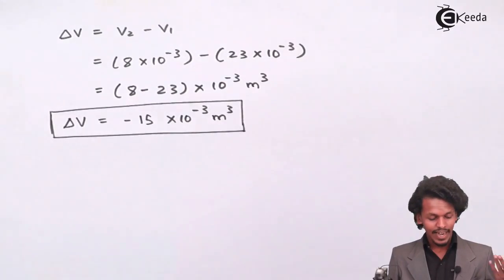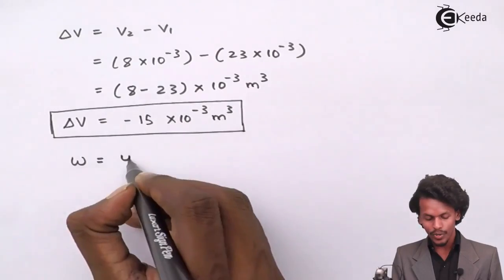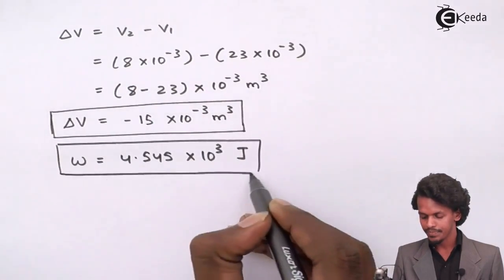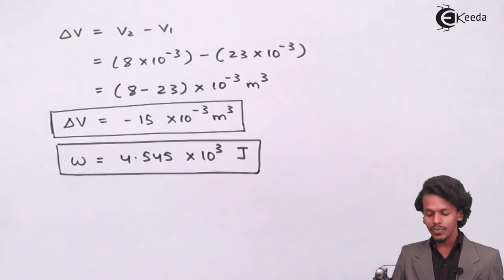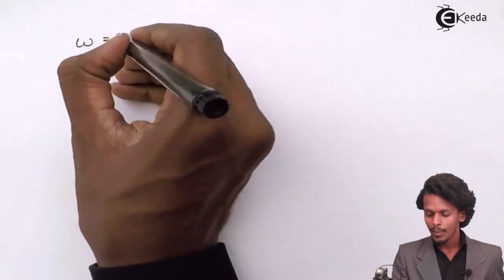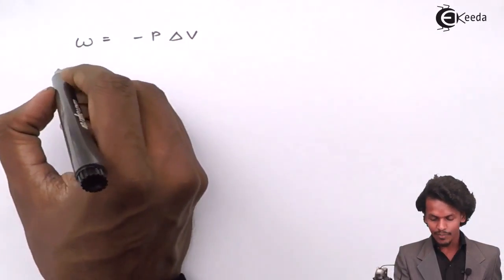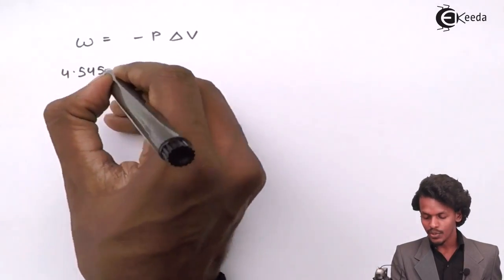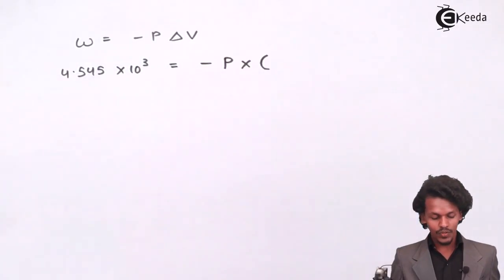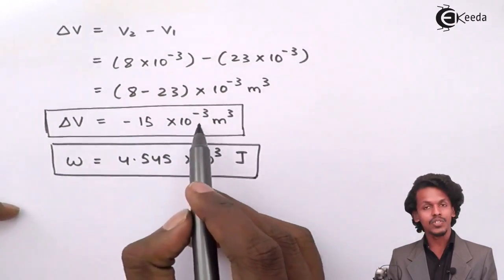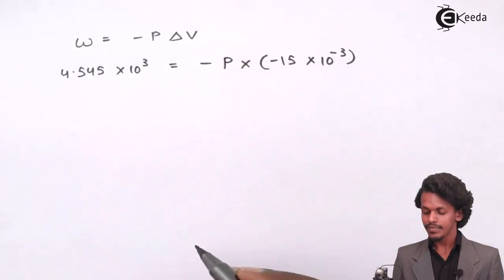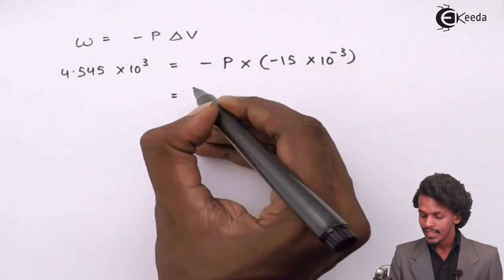The work W = 4.545 x 10³ J. Substituting into the formula W = -P ΔV: 4.545 x 10³ = -P x (-15 x 10⁻³). The negatives cancel since minus times minus is plus.